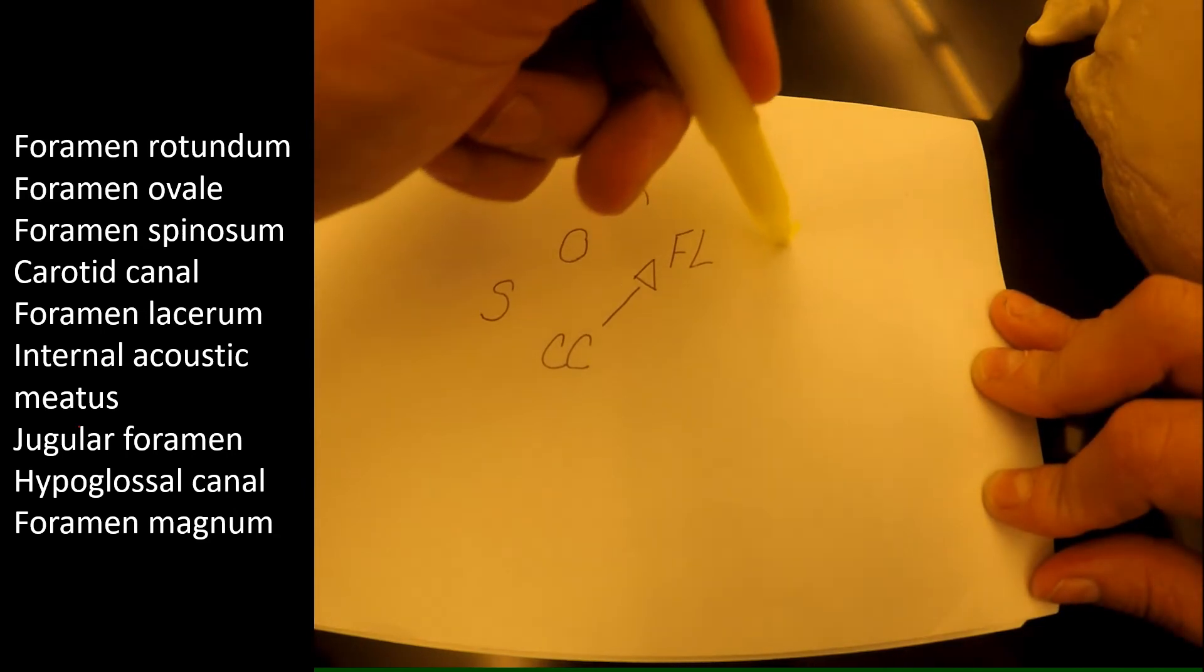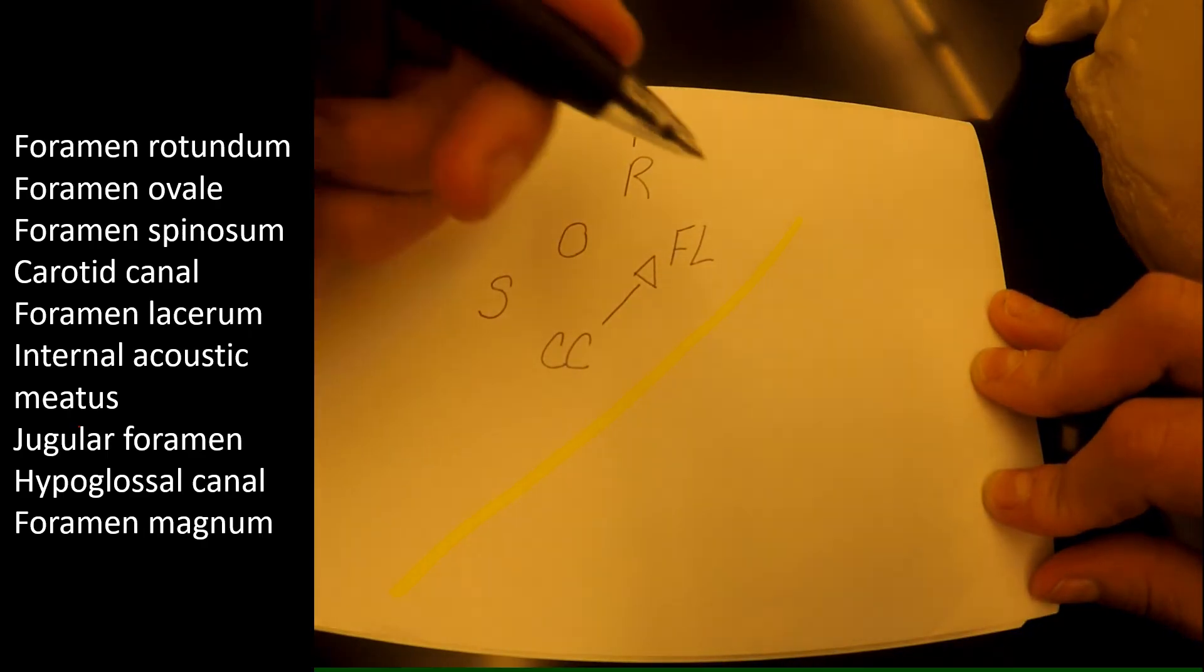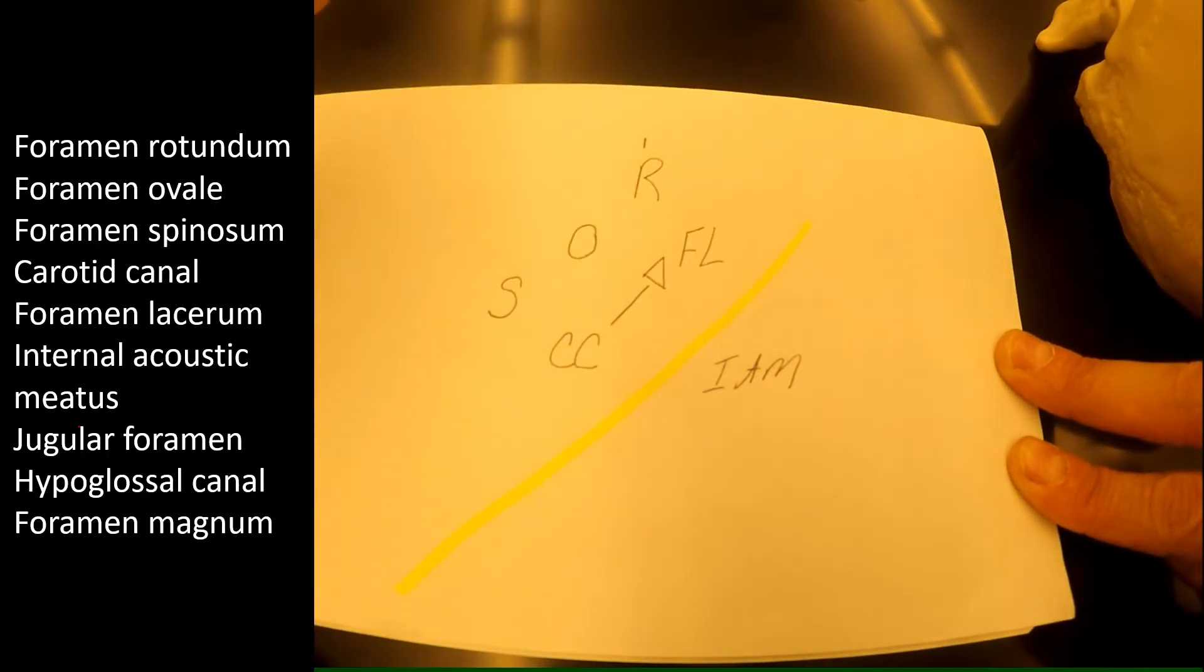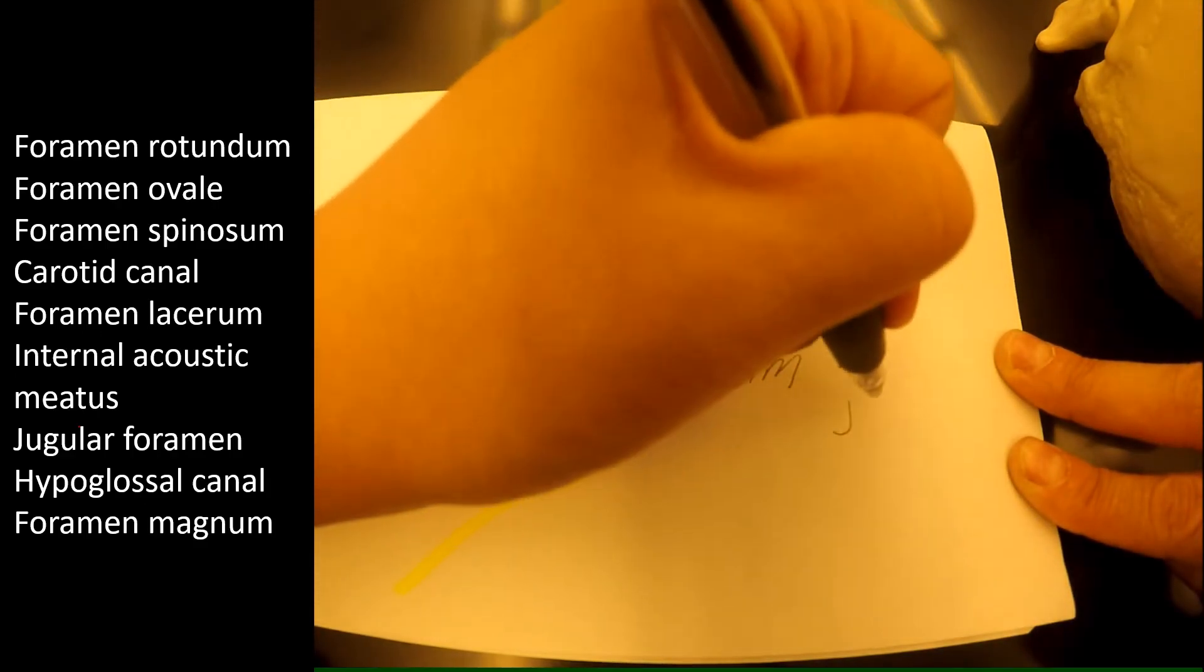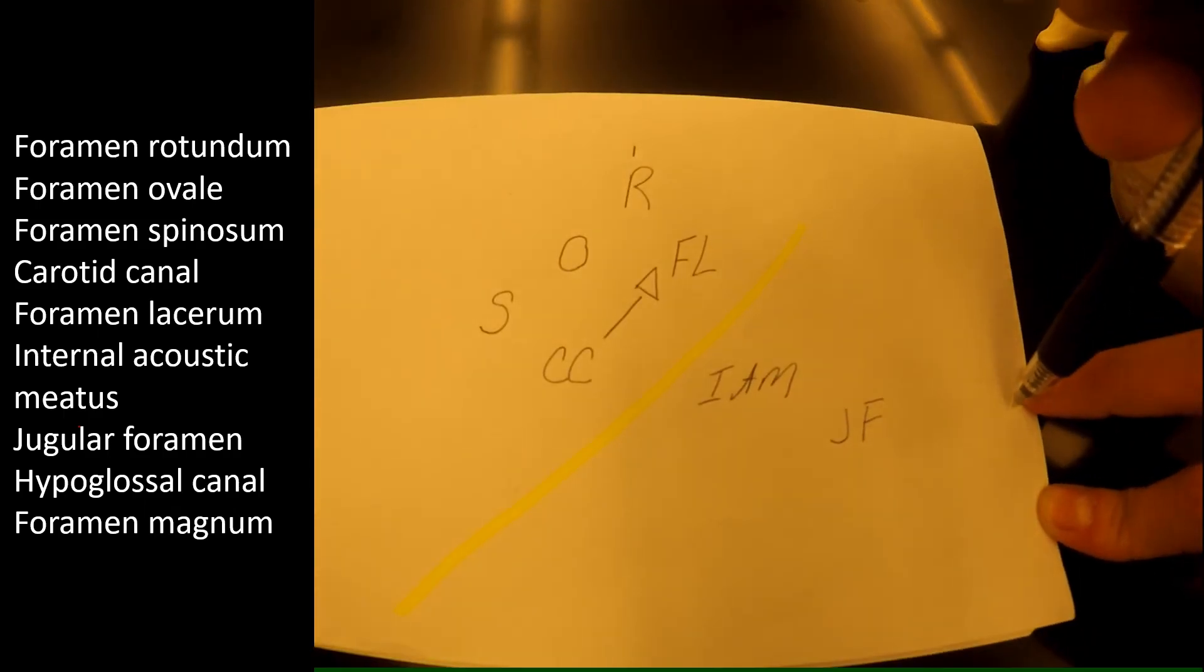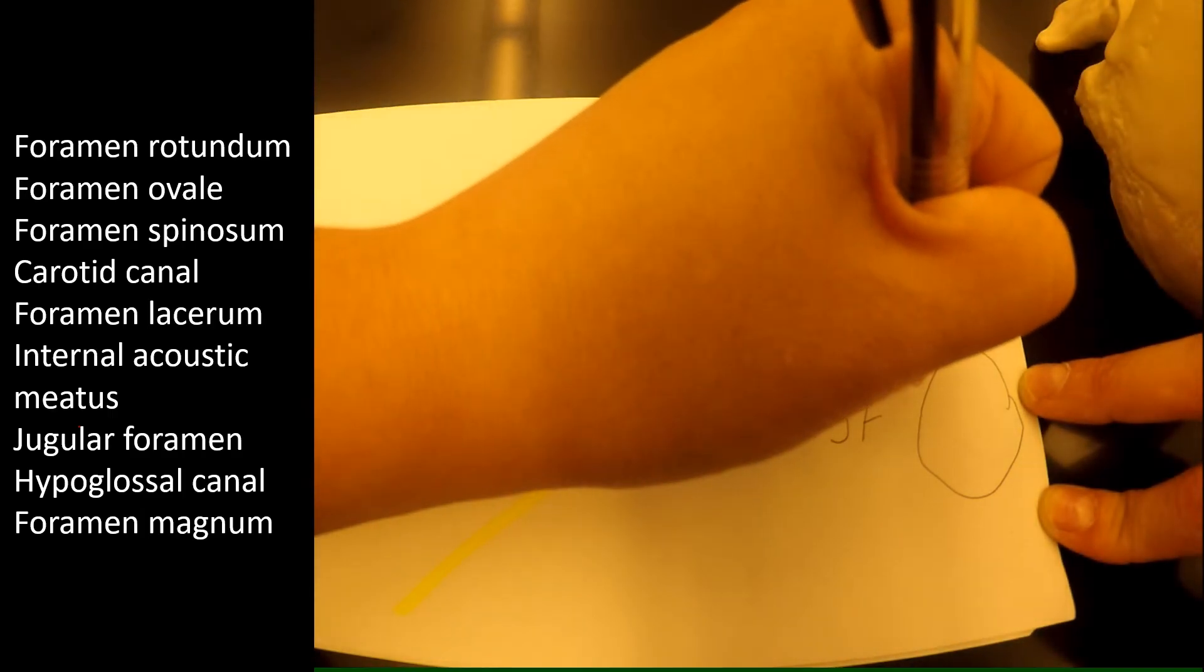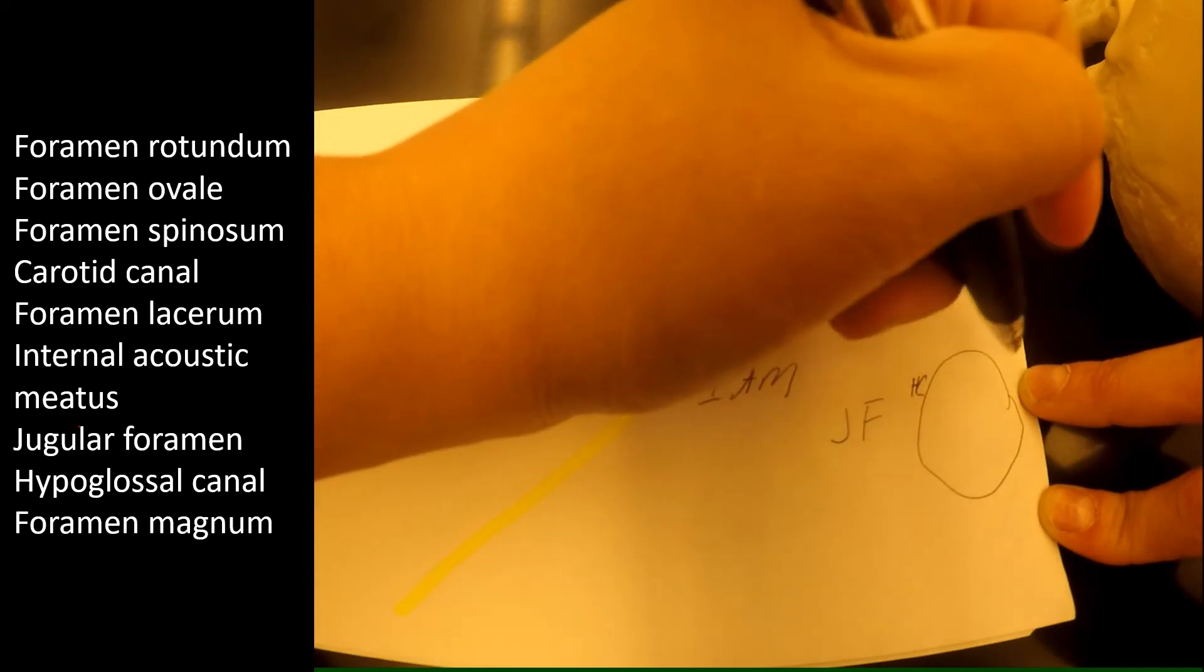Then you go over the mountain. And over the mountain is your internal acoustic meatus followed by your jugular foramen. And right next to the foramen magnum is your hypoglossal canal.